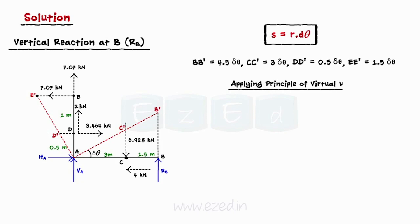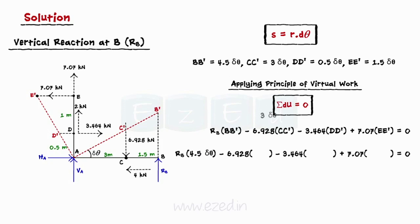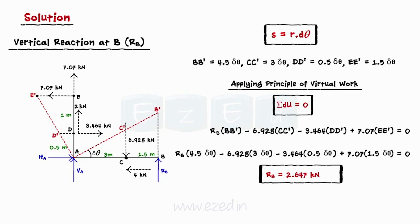Applying the principle of virtual work, we get summation dU = 0. We can now directly multiply the forces acting at points B, C, D, and E with the respective displacements B–B', C–C', D–D', and E–E' respectively. On substituting the forces and their virtual angular displacements and then simplifying, we get the vertical reaction at B equal to 2.647 kN acting vertically upwards.